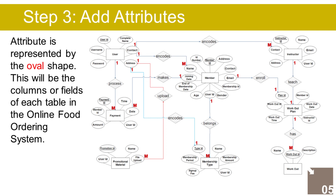The Rating entity has the following attributes: ID (Primary Key, represented with underline), menu ID (Foreign Key), score, remarks, date recorded, and customer ID (Foreign Key).